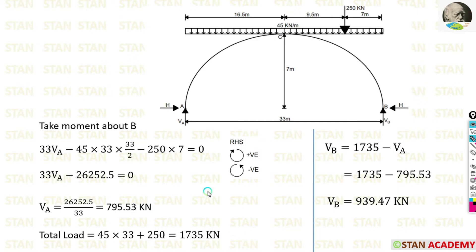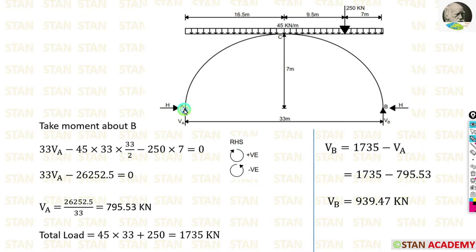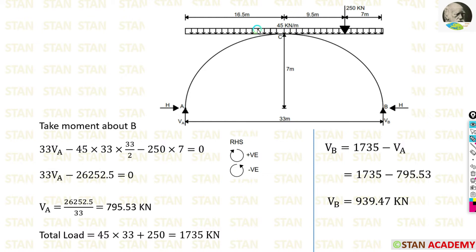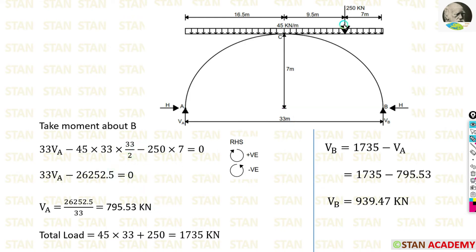Now we find the reactions. To find VA, we take moments about point B, moving towards the right-hand side. Clockwise is positive, anticlockwise is negative. VA acts clockwise about B at a distance of 33 meters, so plus 33·VA. The UDL of 45 kN/m acts anticlockwise, so minus 45×33×(33/2). The point load of 250 kN also acts anticlockwise at a distance of 7 meters, so minus 250×7.